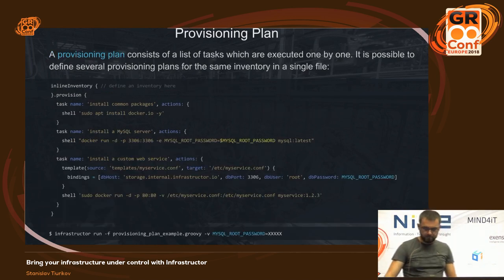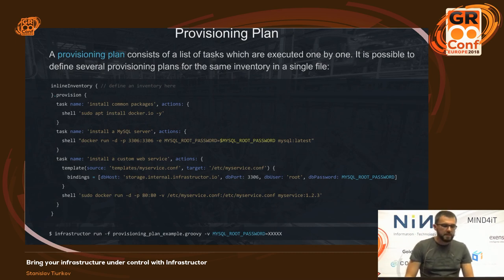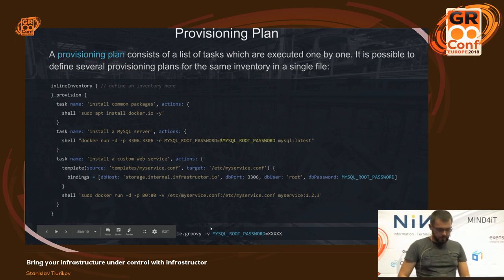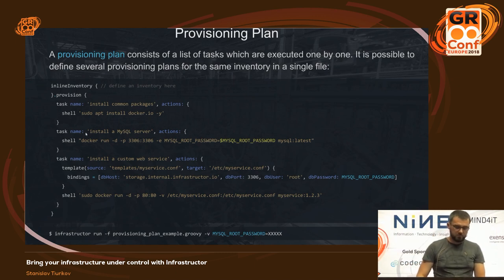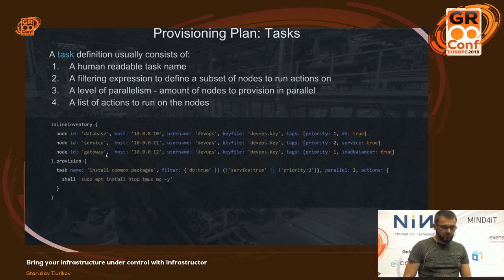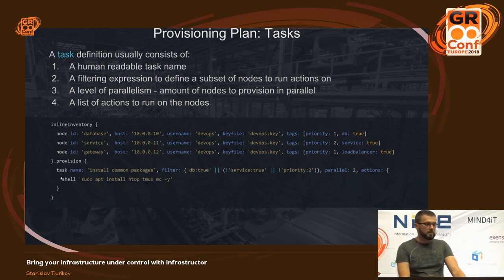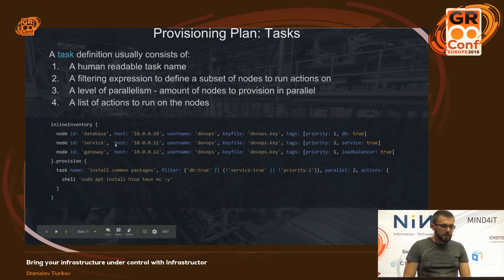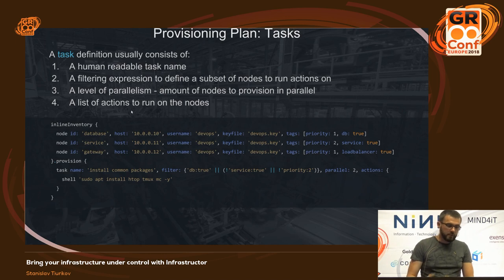A provisioning plan consists of a list of tasks which are executed one by one. It is possible to define several provisioning plans for the same inventory in a single file. The core element of a provisioning plan is a task. Task definition usually consists of a human-readable task name, a filtering expression to define a subset of nodes to run actions on, a level of parallelism, and a list of actions to run on the nodes.